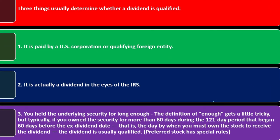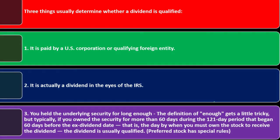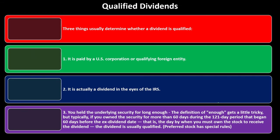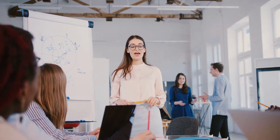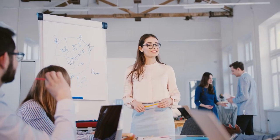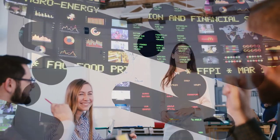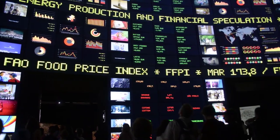You held the underlying security for long enough - the definition of 'enough' gets a little tricky. Typically, if you own the security for more than 60 days during the 121-day period that began 60 days before the ex-dividend date - that is, the day by which you must own the stock to receive the dividend - the dividend is usually qualified. When talking about dividends, it gets confusing to determine who gets the dividend since these stocks trade all the time, which is why the dates get a little complicated.